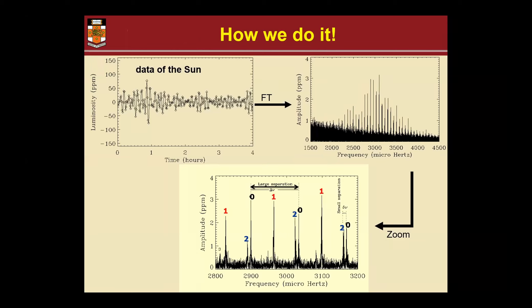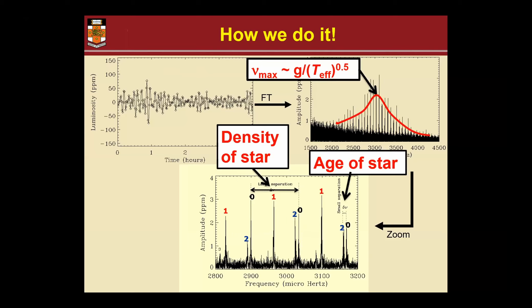If we zoom in on that, we can see that there is a certain pattern to it - it's quite regular. That comes from the number of modes that are causing each of these and their overtones. We have radial modes indicated with a zero, quadrupole modes with a two, dipole modes with a one, and we also have some octopole modes. That is essentially how we look into the star.